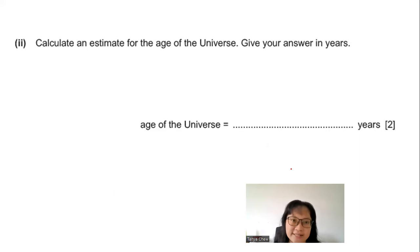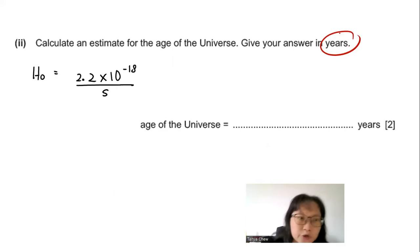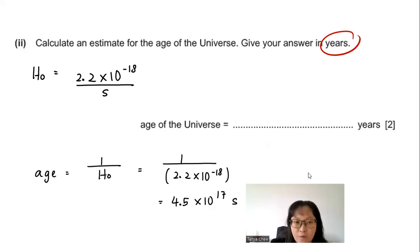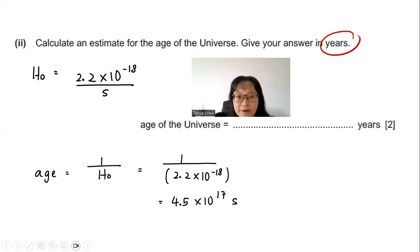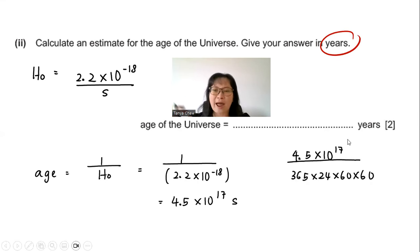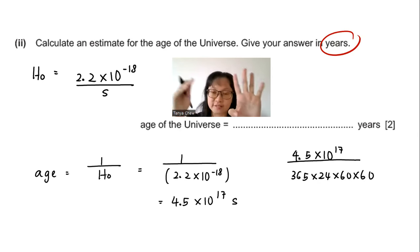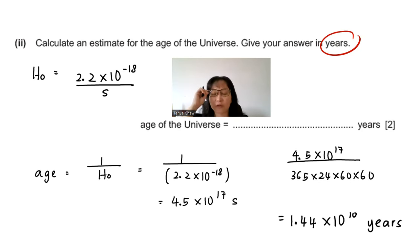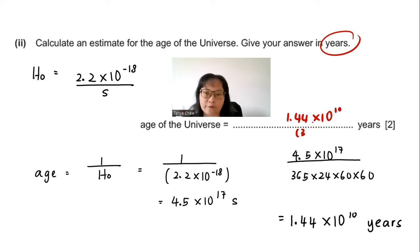Part C2: Calculate an estimate for the age of the universe in years. Age = 1/H₀ = 1 ÷ (2.2 × 10⁻¹⁸) = 4.5 × 10¹⁷ seconds. Converting to years by dividing by 365 × 24 × 60 × 60 gives 1.44 × 10¹⁰ years, or 1.4 × 10¹⁰ years to three significant figures.